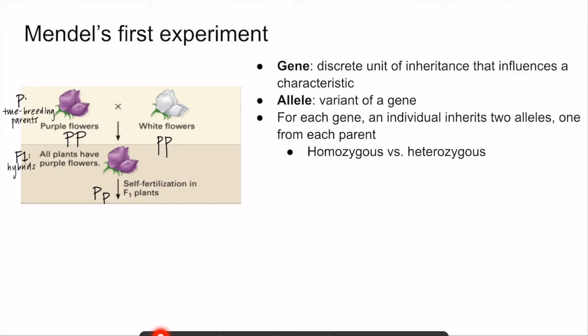An allele is a variant of a gene that encodes for a specific trait. For the flower color gene, there are two alleles: one that encodes for the purple flower trait, called the purple allele, and another that encodes for the white flower trait, called the white allele. For each gene, an individual inherits two alleles — one from each parent. This is true for diploid organisms, since diploids have two sets of chromosomes and inherit one set from each parent, meaning for each gene they have one allele from their mother and one from their father.